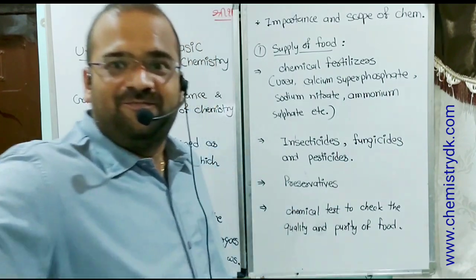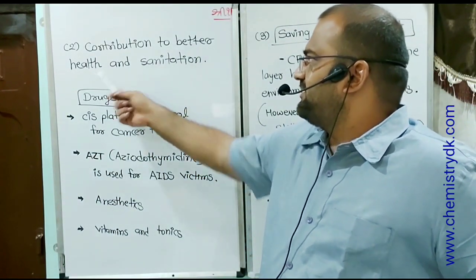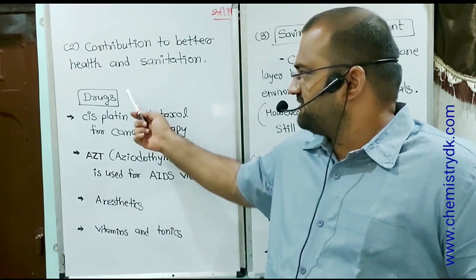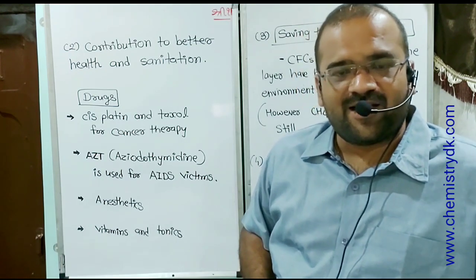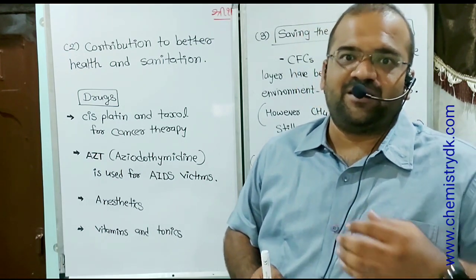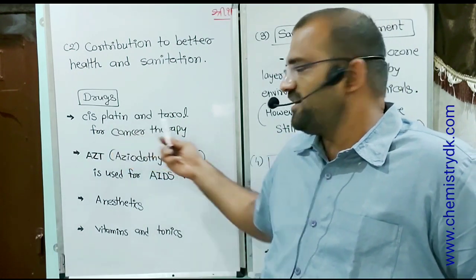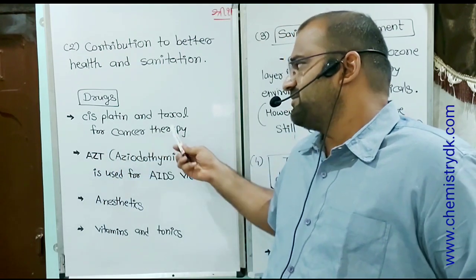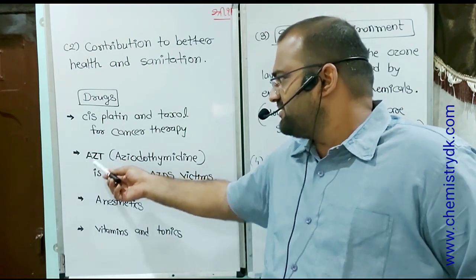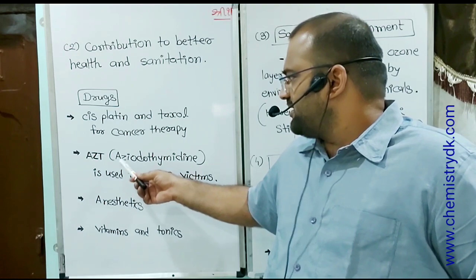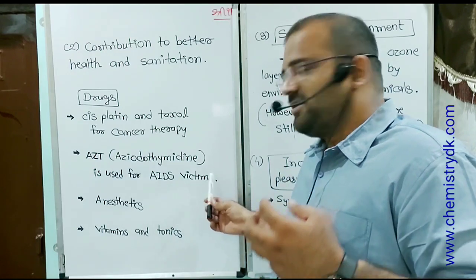Let's see the second topic. Second contribution to better health and sanitation medication. In drugs, so many chemicals are invented as drugs and many diseases can be curable, like cisplatin and taxol. Cisplatin and taxol are useful to cancer therapy. Another medicine, AZT. AZT's full form is azidothymidine. Azidothymidine is useful for AIDS victims.